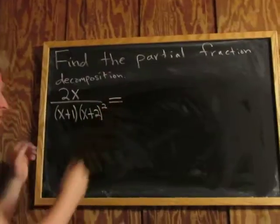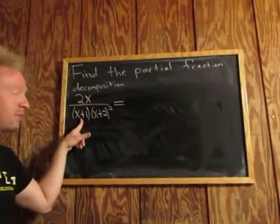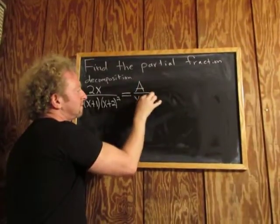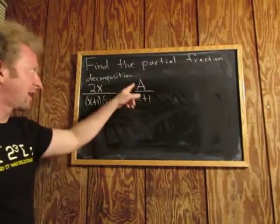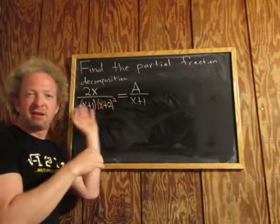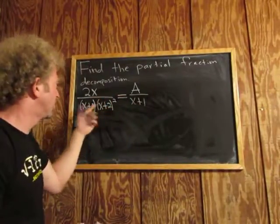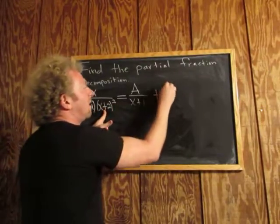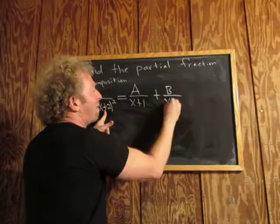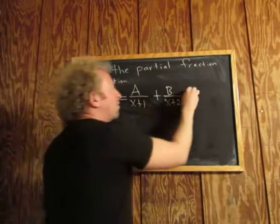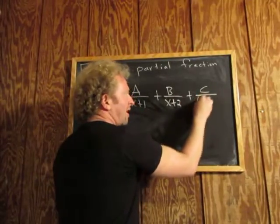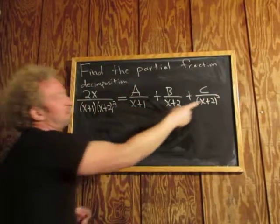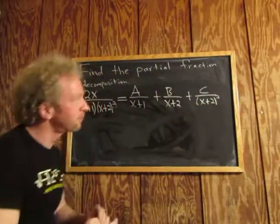You start by writing this as equal to — well, this is a linear factor, so it's A over (x+1). Whenever it's linear, it's just a constant like A, B, or C. If it's a quadratic, then you have to have that ax plus b term. But these are linear, so it's just A, B, C. Here we have (x+2), so it's B over (x+2), but it appears twice, so we have to write it twice: plus C over (x+2) squared. If there was a cube here, we would have to do it one more time — plus D over (x+2) cubed.